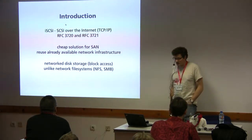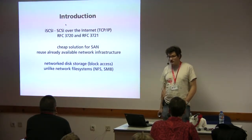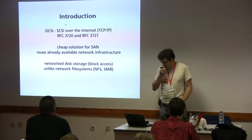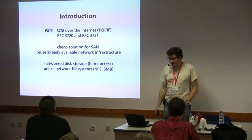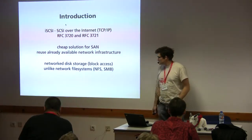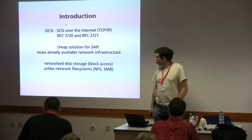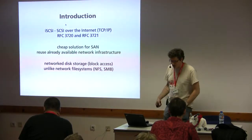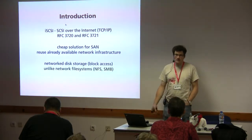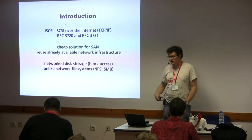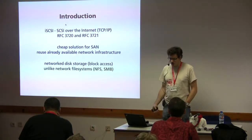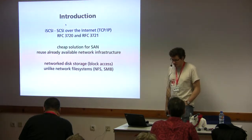iSCSI is, in short, SCSI over the internet. There are two RFCs covering the base protocol. It was mainly designed as a cheap solution for SANs, because everything fiber channel was extremely expensive. It allows reuse of existing network infrastructure — if you already have Ethernet ports, you can use iSCSI much more easily than fiber channel.